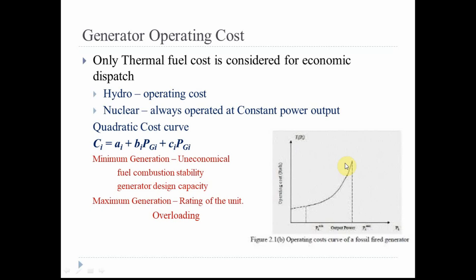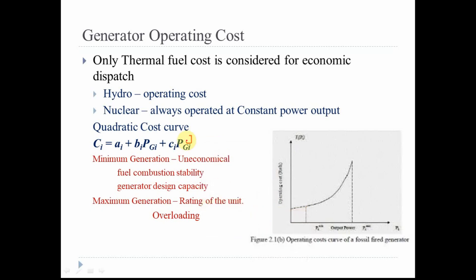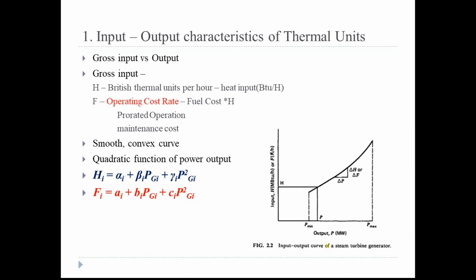This curve is called the quadratic cost curve. The cost function is defined as: F = ai + bi·Pgi + ci·Pgi², where ai, bi, and ci are constants. Pgi is the power output of the generating unit. The details of these constants, including their units, will be covered in the next topic. Now we move on to the three performance curves.